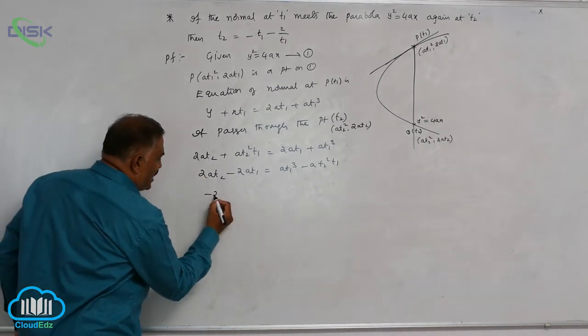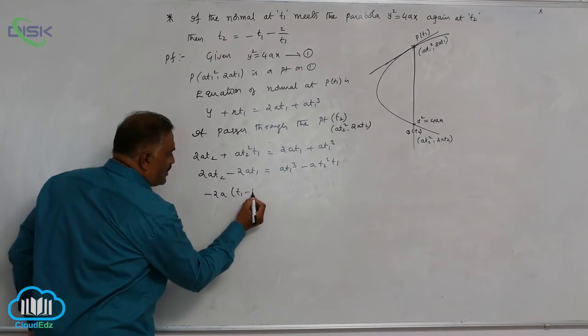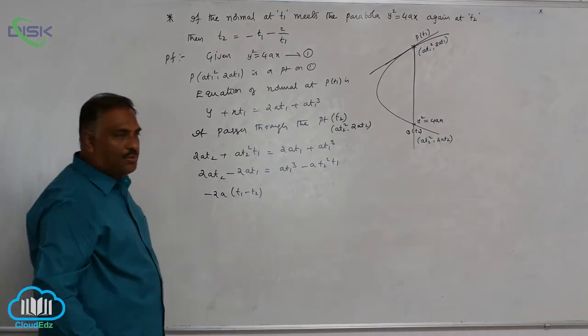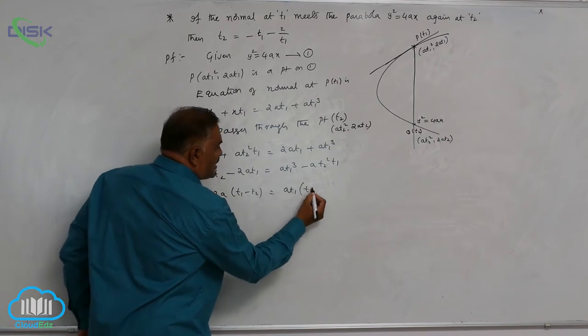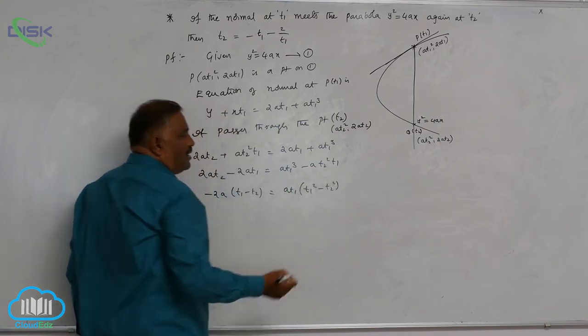You see that in LHS, 2A is common. Better you take -2A common so that it will become T1 - T2. Again here, AT1 is common: T1² - T2².